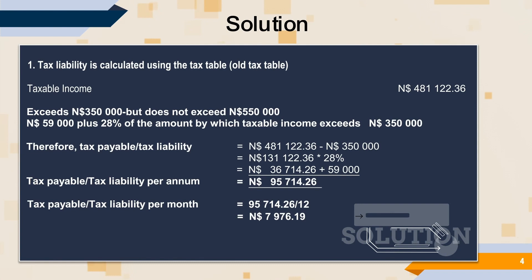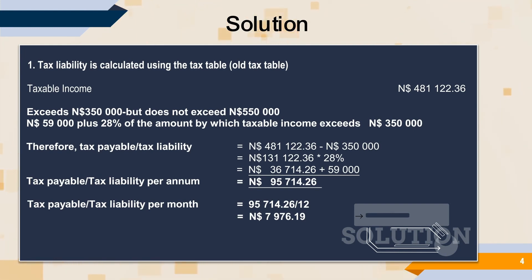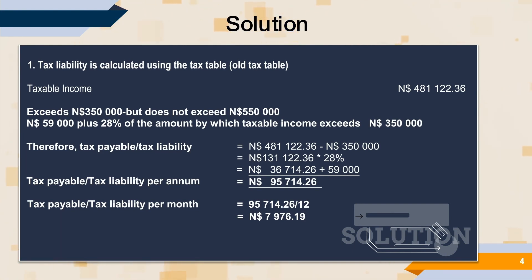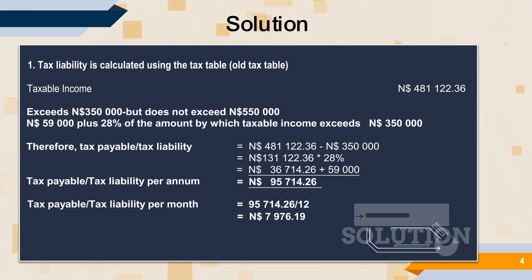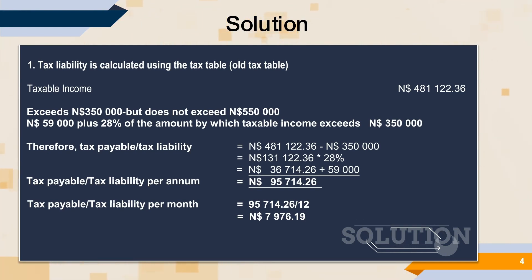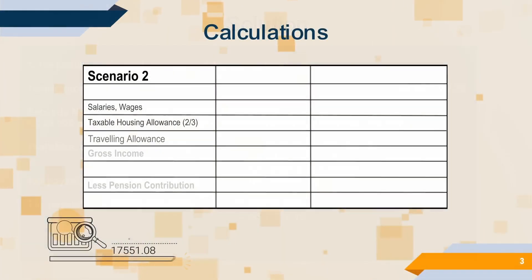What then is the difference between what I was paying previously on the old tax rate and what I'm paying now on the new tax rate? Your monthly tax liability on the old tax rate was $9,142.89, and your monthly tax liability on the new tax rate is $7,976.19. The difference is $1,166.70, so you'll be paying $1,166.70 less than what you were paying previously.